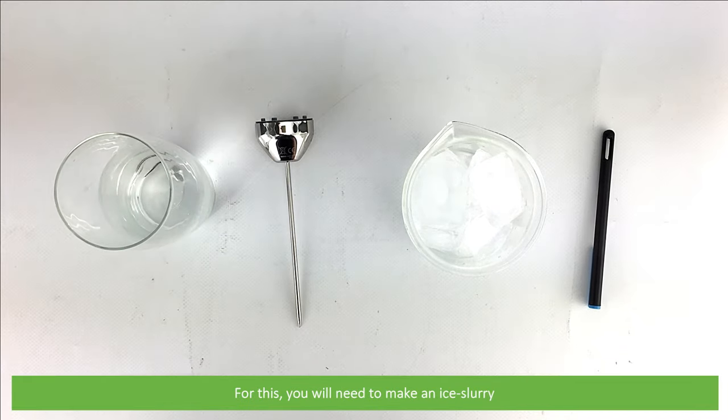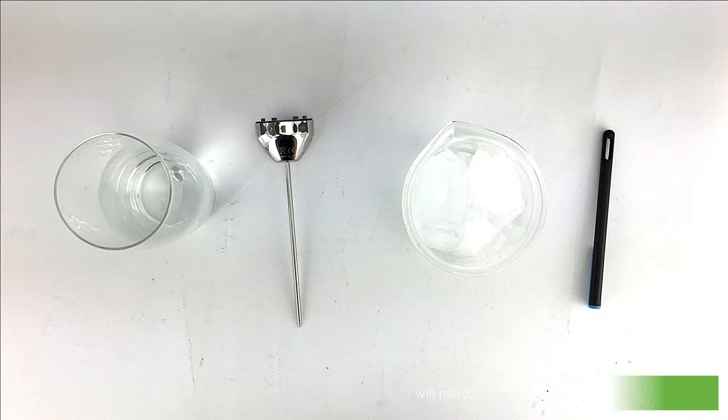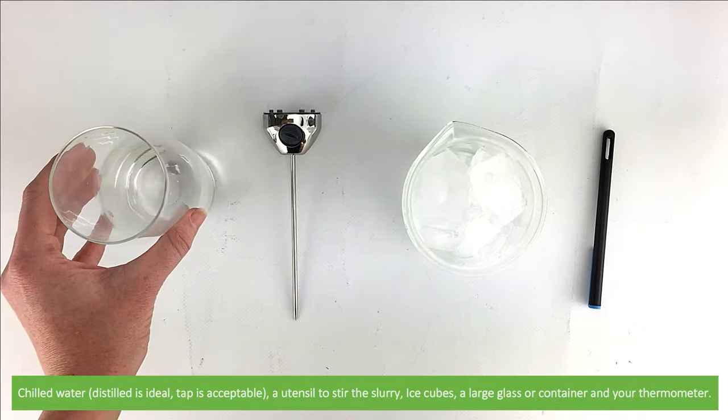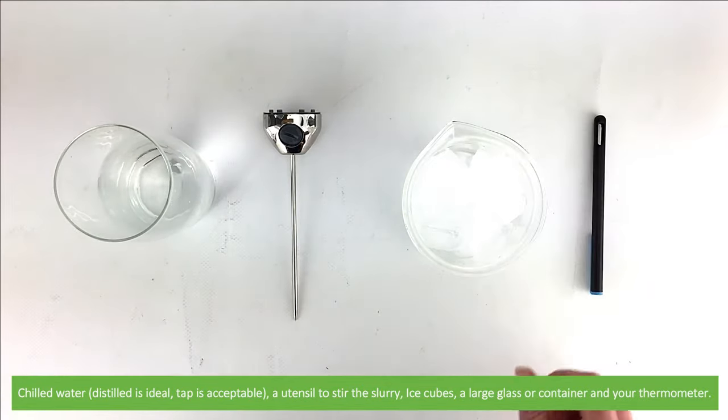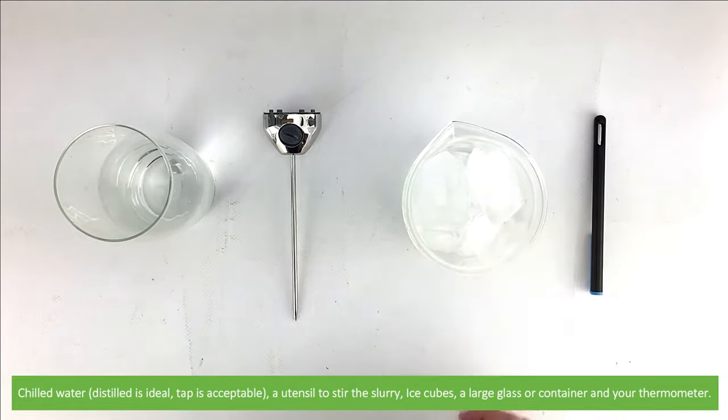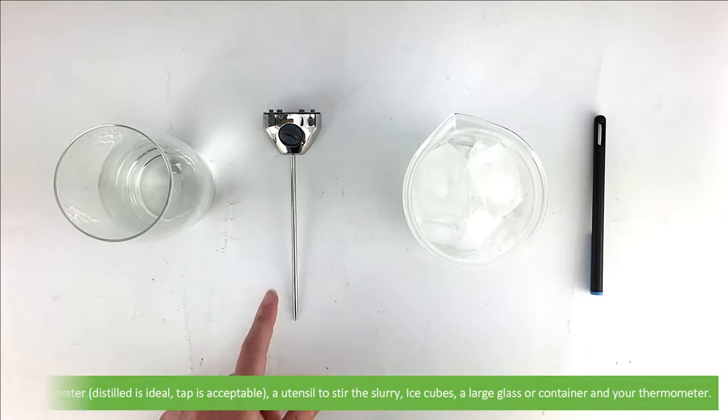For this you'll need to make an ice slurry. To make an ice slurry you will need chilled water, distilled is ideal, tap is acceptable, a utensil to stir the slurry, ice cubes, a large glass or container, and your thermometer.